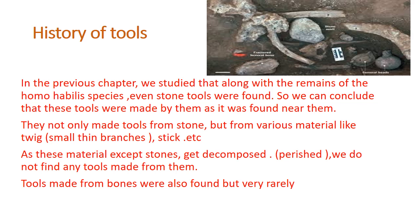In the previous chapter we studied that along with the remains of the homo habilis species, stone tools were also found, so we can conclude that these tools were made by them. They not only made tools from stones but from various materials like twigs — a twig is a small thin branch — sticks, etc. All these materials except stones get decomposed, meaning they get perished, so we do not find tools made from them. Tools made from bones were also found, but very rarely.